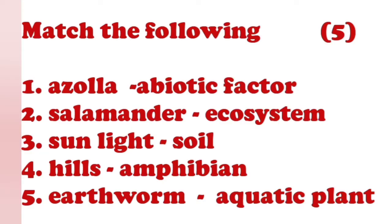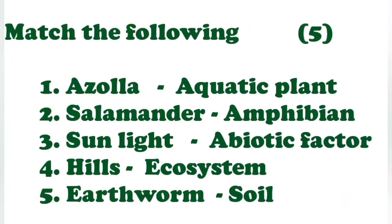Salamander is an amphibian. Sunlight, air, and water are abiotic factors. Pond is an ecosystem. Earthworm lives in soil. So the matches are: asola — aquatic plant, salamander — amphibian, sunlight — abiotic factor, hills/pond — ecosystem, earthworm — soil.